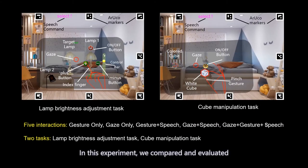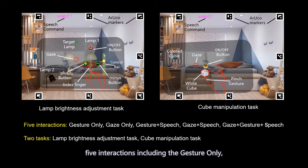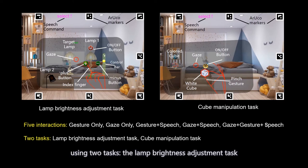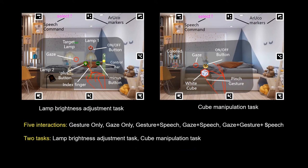In this experiment, we compared and evaluated five interactions including gesture only, gaze only, gesture and speech, gaze and speech, and gaze and gesture and speech techniques, using two tasks: the lamp brightness adjustment task and the cube manipulation task.